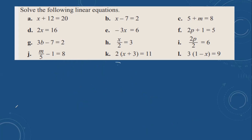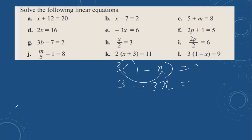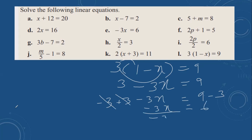Then next: 3(1 minus x) equals 9. Expanding: 3 minus 3x equals 9. The opposite of plus 3 is minus 3 on both sides. These cancel out. Minus 3x equals 6. Dividing by 3, the answer is minus 2.